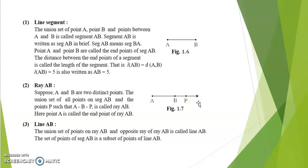Next is line AB. The union set of points on ray AB and the opposite ray of ray AB is called line AB. The set of points of segment AB is a subset of points of line AB. If we extend ray AB on both sides and put arrowheads, we get line AB. A line can be extended on both sides infinitely.